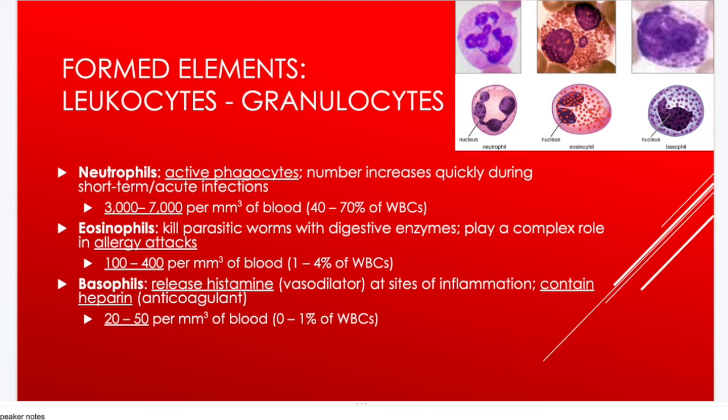Basophils release histamine, a vasodilator that dilates blood vessels at sites of inflammation. They also contain heparin, an anticoagulant that prevents blood clotting. There are only 20–50 basophils per drop of blood, representing 0–1% of total white blood cells.